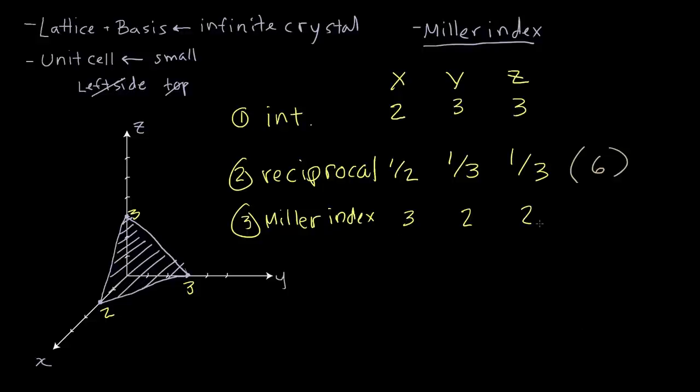So these values represent the Miller index for this plane. And once we have them, the convention that is held to write out the plane is to use a round parenthesis and then write the values inside.